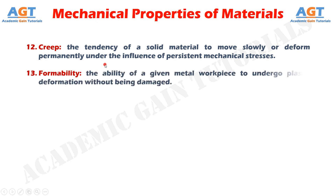Formability. Formability is the ability of a given metal workpiece to undergo plastic deformation without being damaged. It is the property of metals which denotes the ease in forming into various shapes and sizes. The different factors that affect formability are crystal structure of metal, grain size, hot and cold working, and alloying elements present in the parent metal. Metals with small grain size are suitable for shallow forming while metals with large grain size are suitable for heavy forming. Hot working increases formability. Low carbon steel possesses good formability.